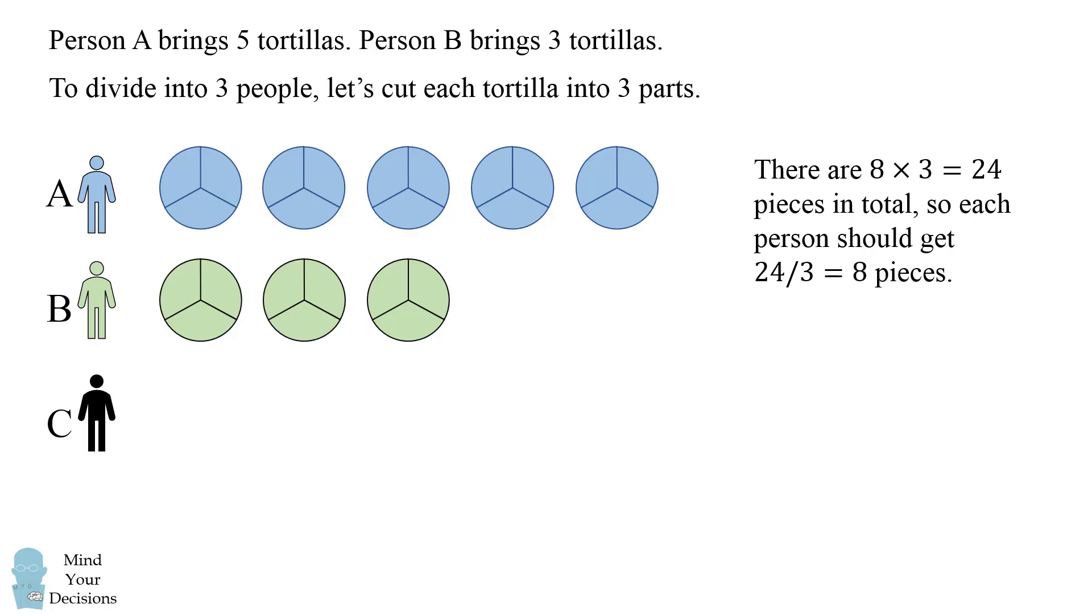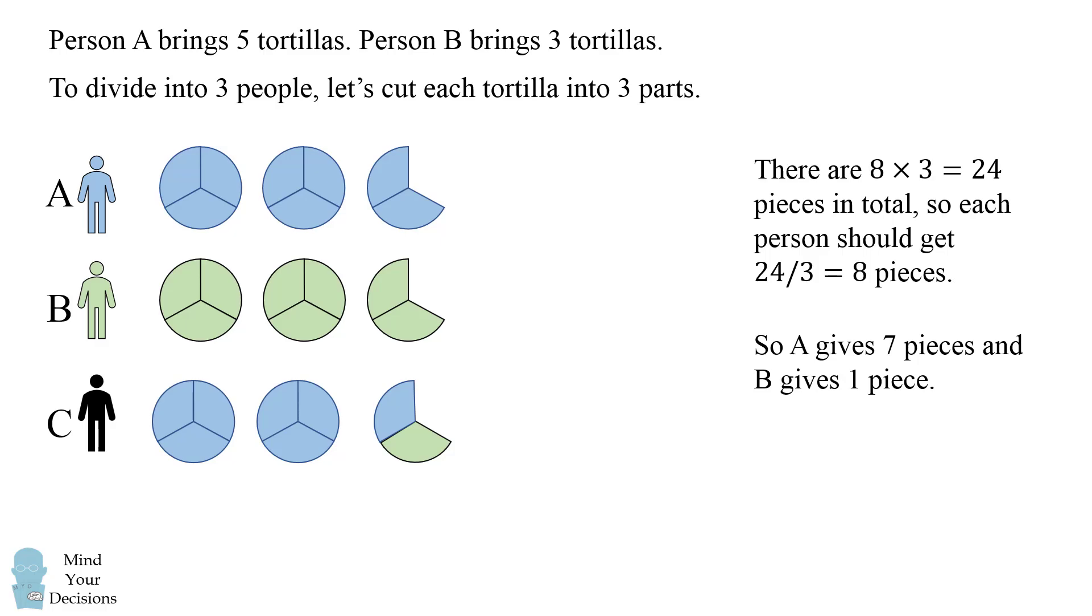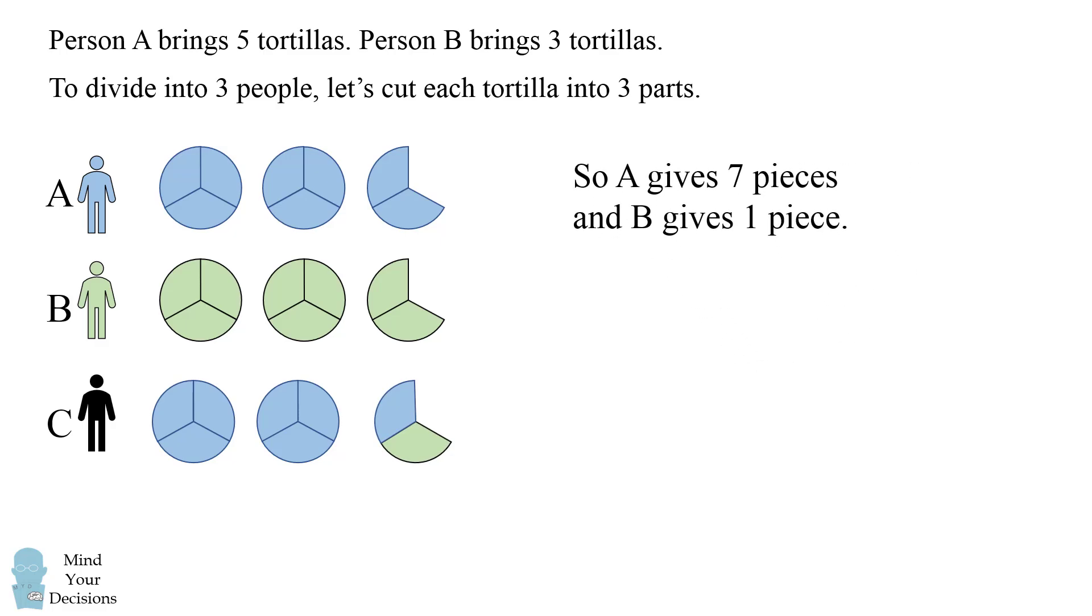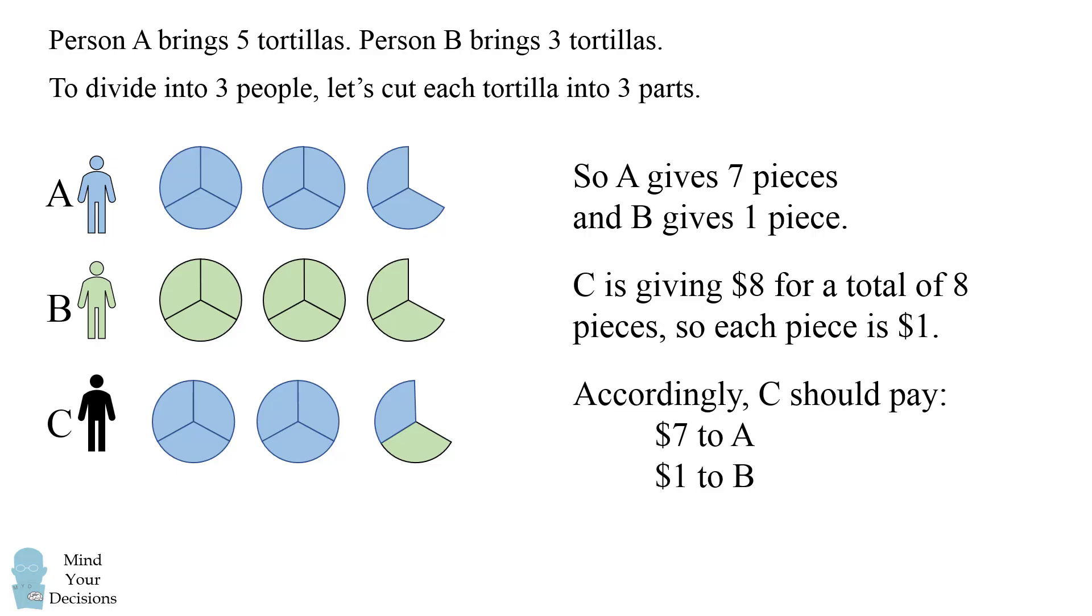In order for this split to happen, A needs to give 7 pieces to C, and B needs to give 1 piece to C. So now you can see that every single person has the exact same amount of food. C is giving 8 dollars for a total of 8 pieces, which means each piece is worth 1 dollar. Consequently, C should pay 7 dollars to A for those 7 pieces, and 1 dollar to B for that 1 piece.